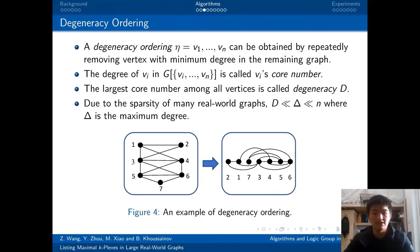We define that, given a degeneracy ordering v_1 to v_n, the degree of v_i in the remaining graph is called v_i's core number. And the largest core number among all the vertices is called the degeneracy d. Finally, the last and the most important thing is, due to the sparsity of many real-world graphs, it holds that d is finer than delta, and delta is finer than n, where delta is the maximum degree, and n is the vertex number.